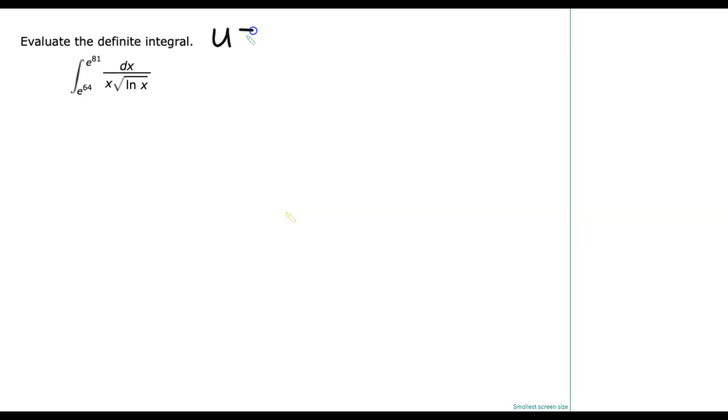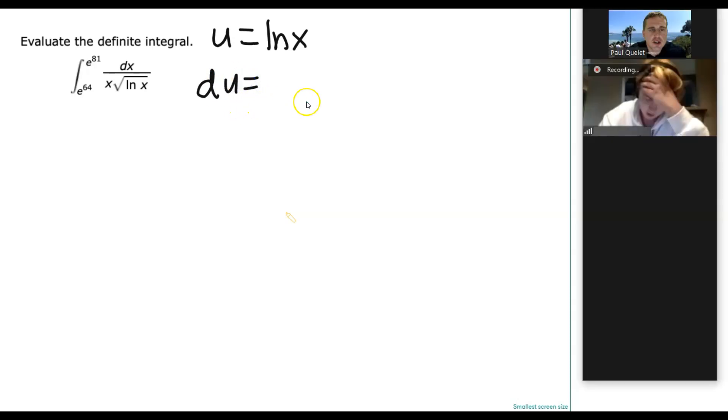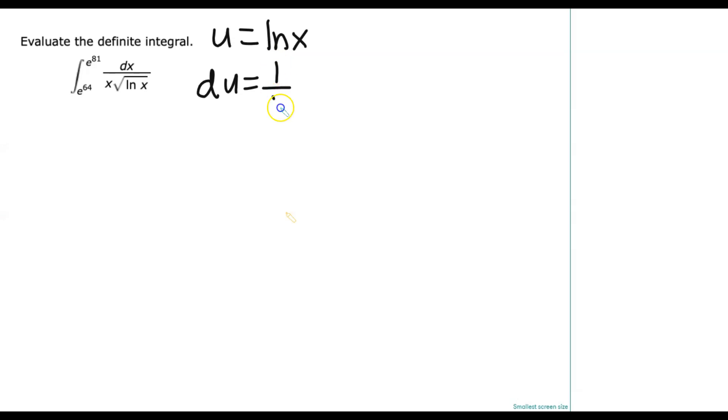So let's try that. So let's do u equals natural log of x. So let's talk about du. What should we get? So I'll do the writing, but you kind of dictate to me. What should du equal to? Beautiful. 1 over x dx.